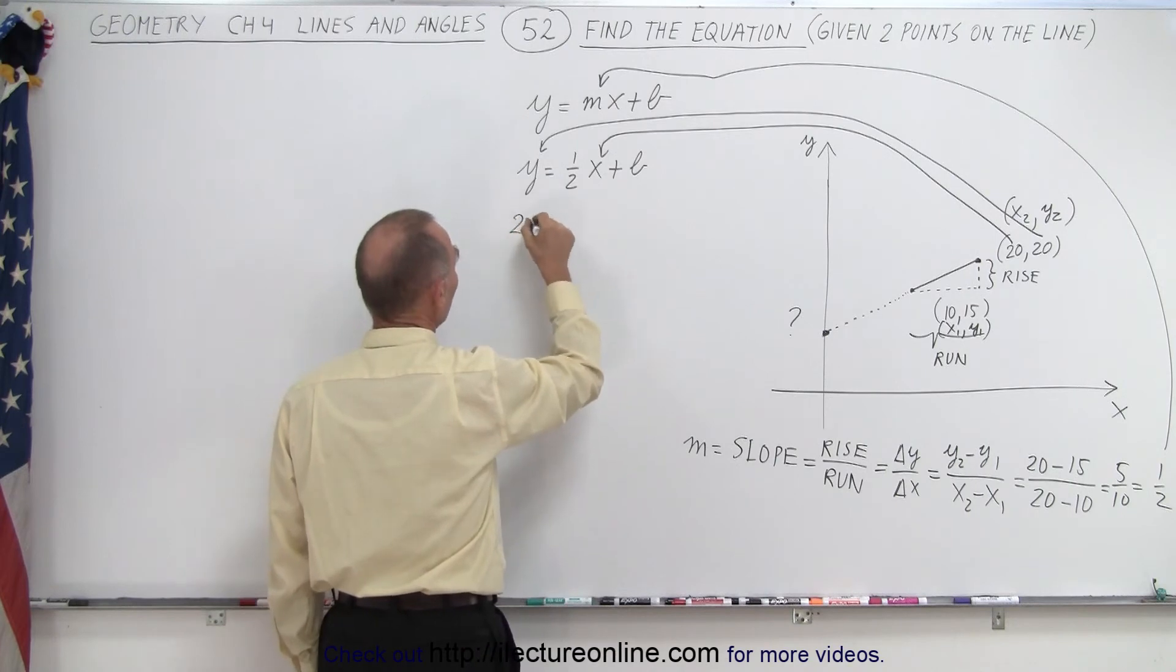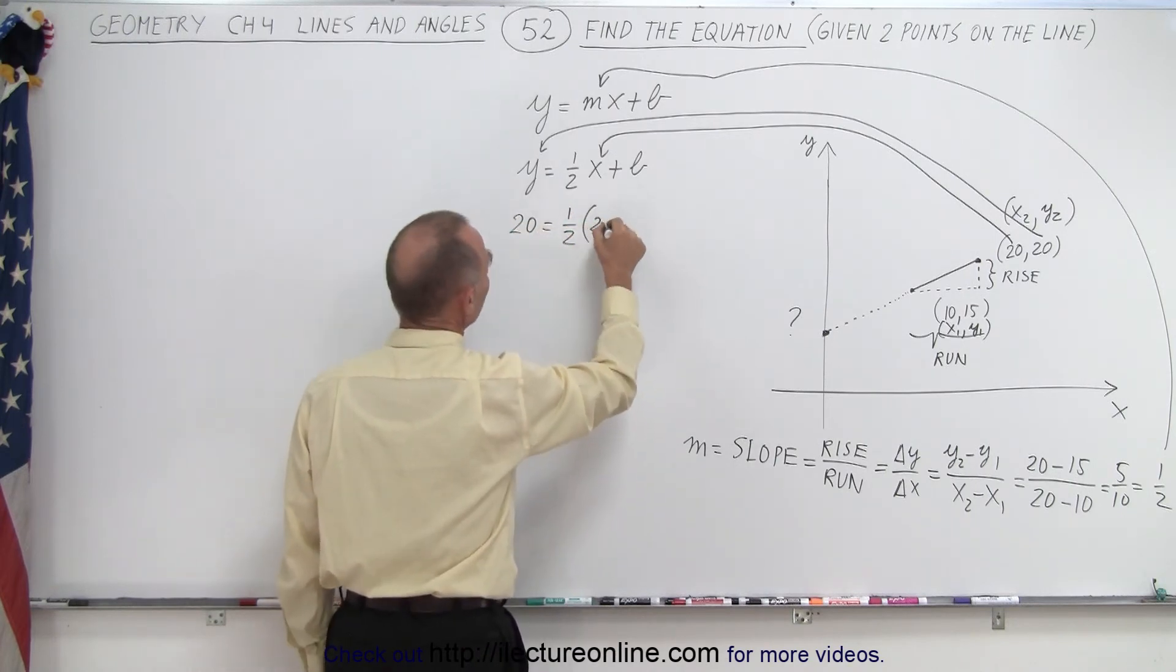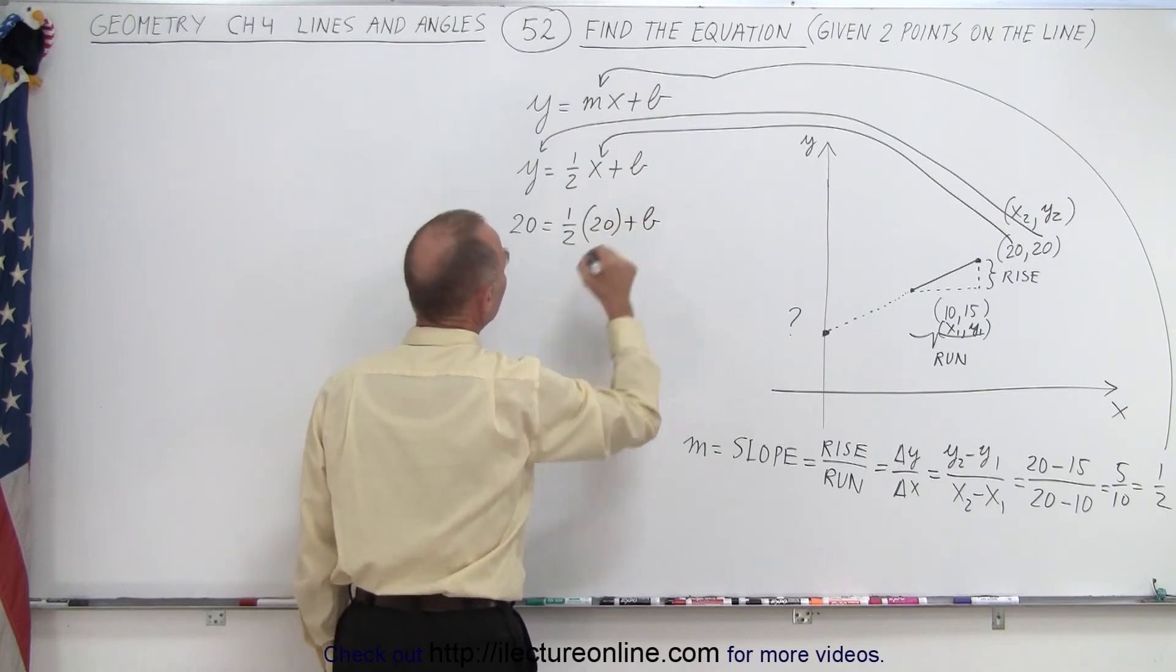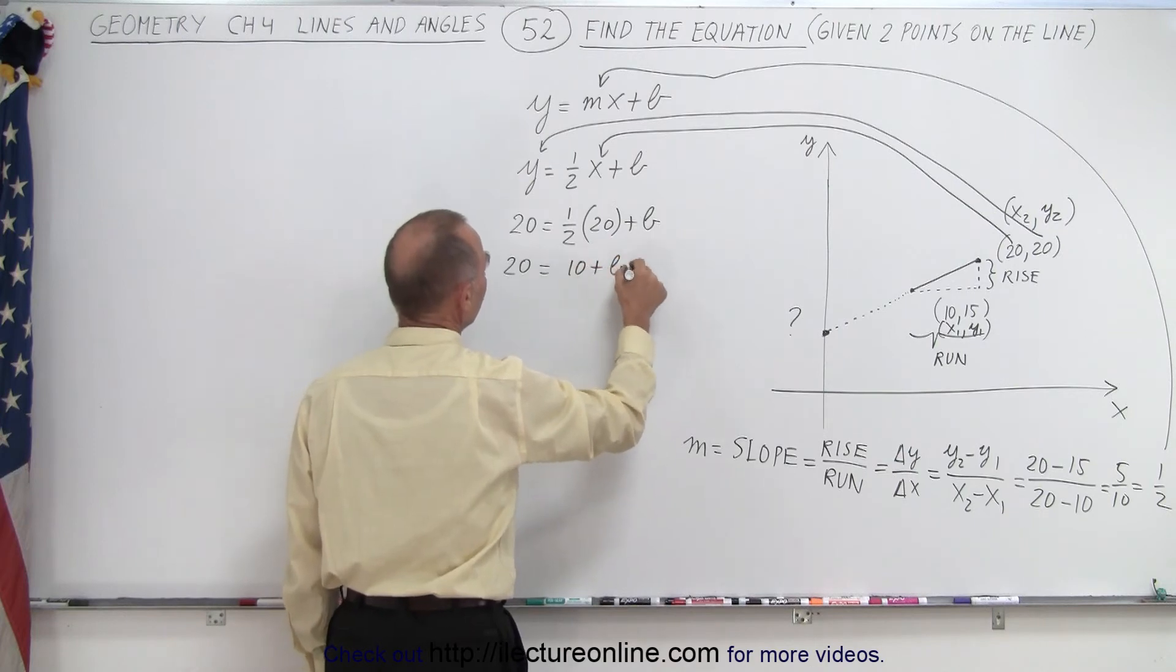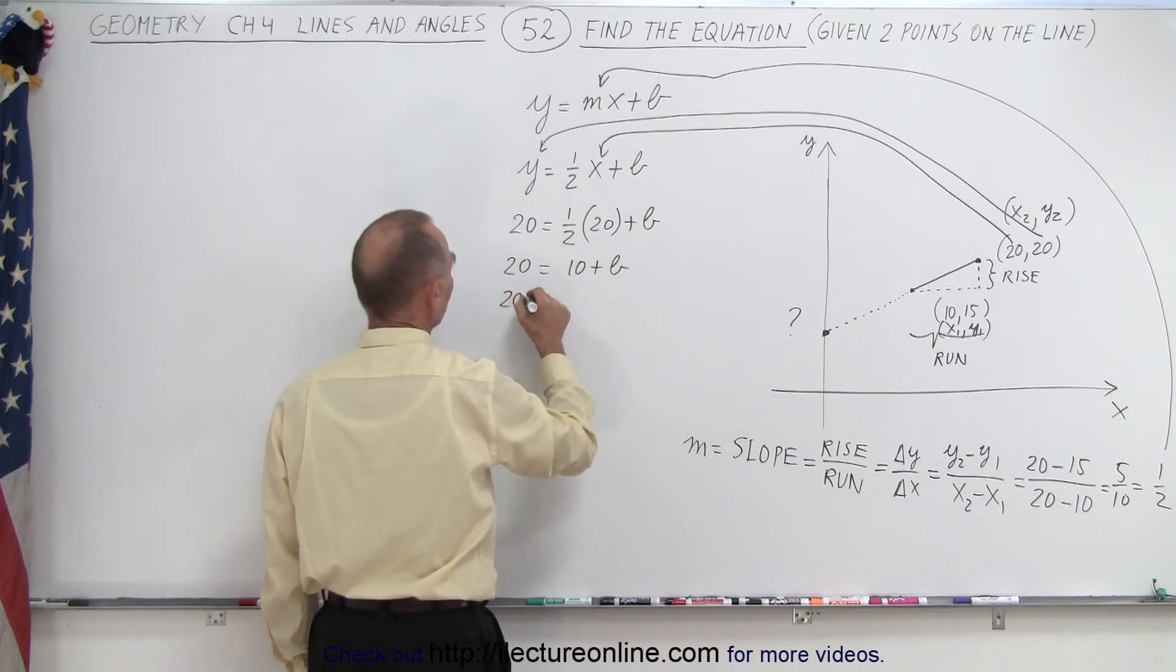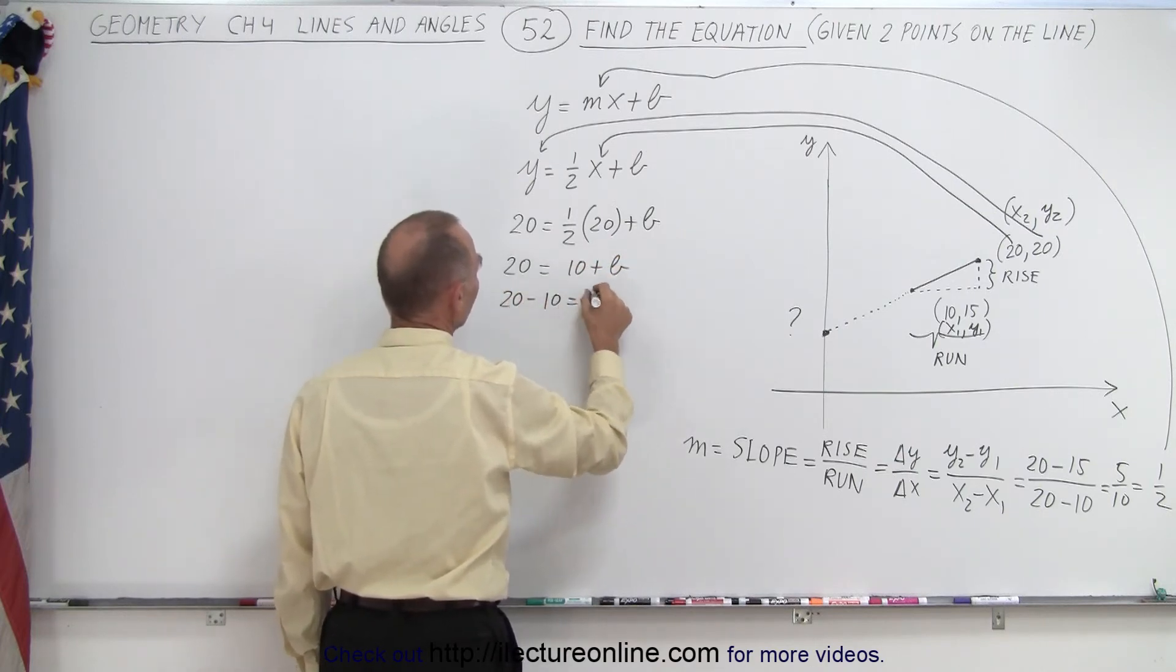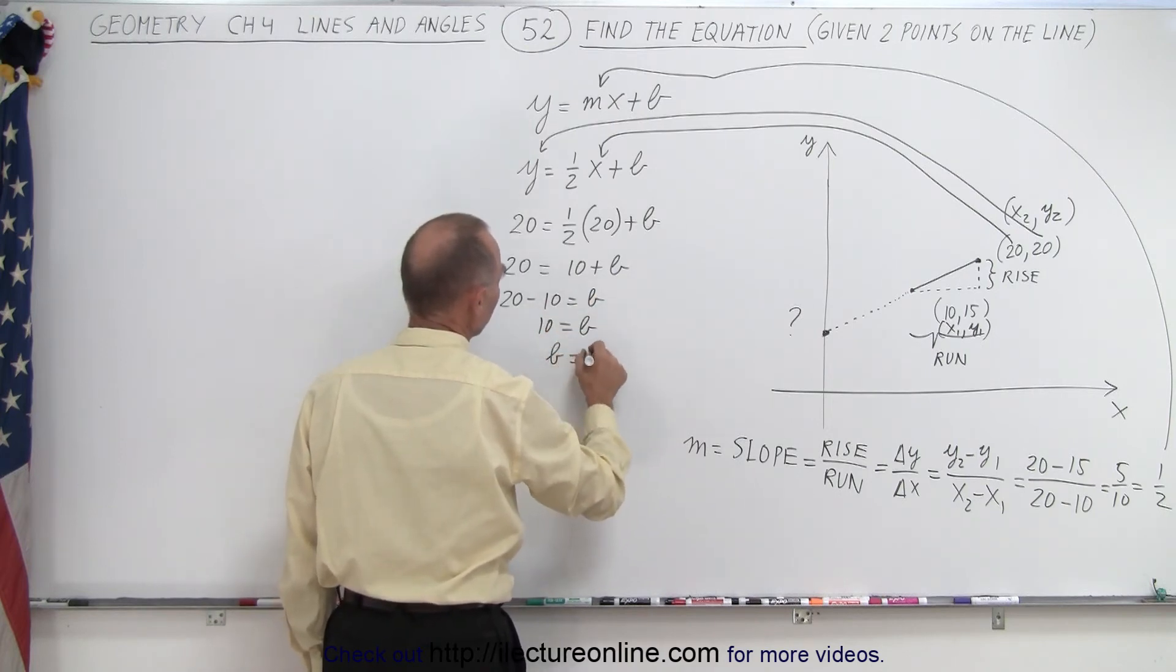So here, y is equal to 20. So we have 20 is equal to 1 half times x, which is also 20, plus b. So in this case, we have 20 is equal to 10 plus b. Subtract 10 from both sides. 20 minus 10 equals b, or 10 equals b, or b equals 10. There we go.